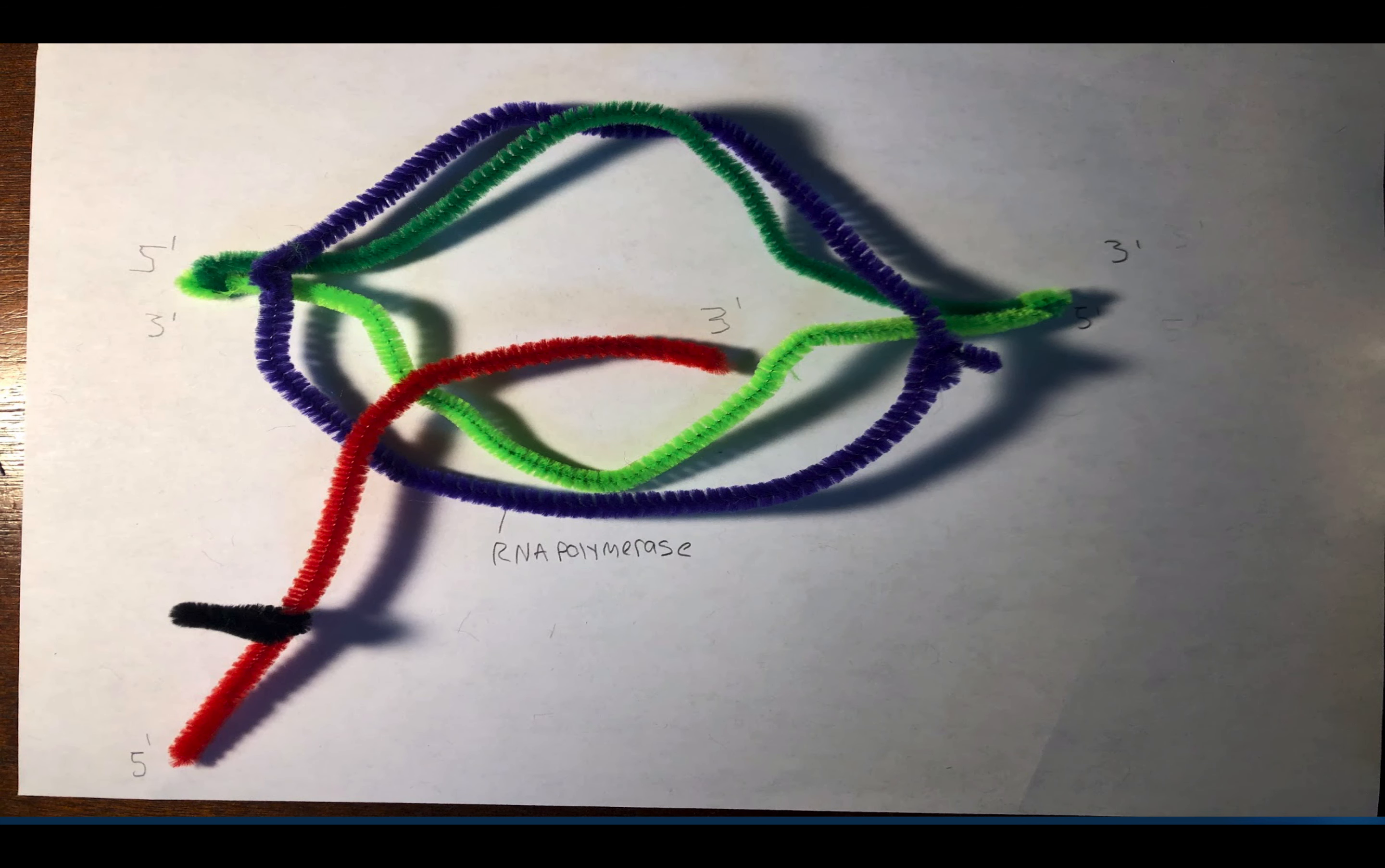In rho-dependent termination, a protein known as Rho, represented by the black molecule on the red RNA strand, binds to a Rho binding site on an mRNA sequence.